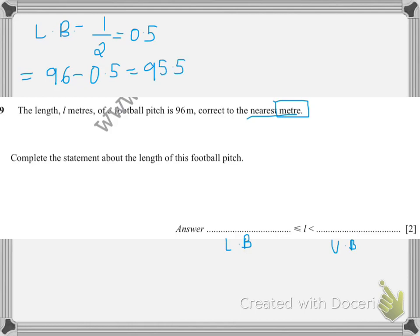For the upper bound, we already know that the number is 0.5 which we need to add. So we'll do 96 plus 0.5, which will be 96.5. When we write the answer here, we write the lower bound amount, which is 95.5, and then the 96.5, which is the upper bound.